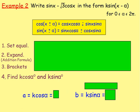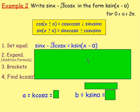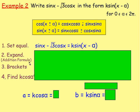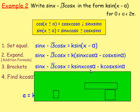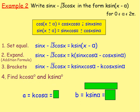Example 2: write sin x minus root 3 cos x in the form k sin(x minus α). But once again, we have radians. So we set them equal: sin x minus root 3 cos x equals k sin(x minus α). Then expand using the addition formula — sin(x minus α) becomes sin x cos α minus cos x sin α — and multiplying out gives k sin x cos α minus k cos x sin α. From there, find the values of k cos α and k sin α.